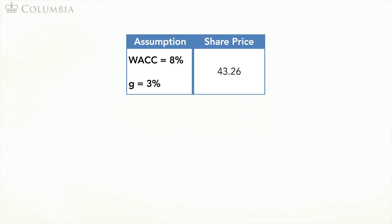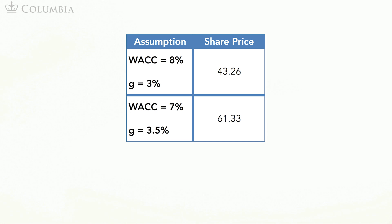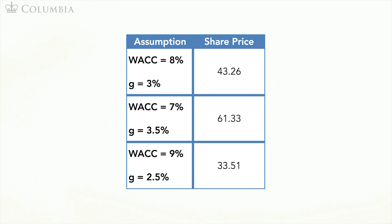For example, if we repeat the same calculation but use instead a weighted average cost of capital of 7% and a terminal growth rate of 3.5%, we end up with a share price of $61.33. If instead we use a weighted average cost of capital of 9% and a terminal growth rate of the free cash flows of 2.5%, we end up with a share price of $33.51. The difference between these two estimates is quite large.